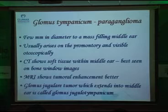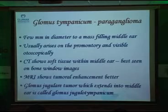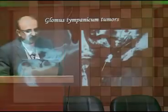Now let us look at tumors. When it comes to tumors, paragangliomas — we have two types. One is glomus tympanicum, which is confined to the middle ear along the promontory — that is the commonest location. Or you also have jugulotympanicum, where you have a tumor within the jugular fossa going into the middle ear, with two components.